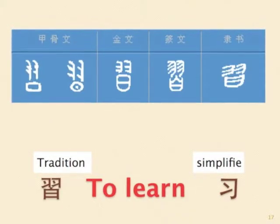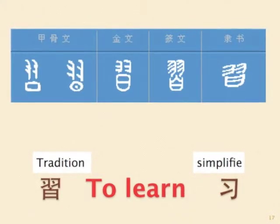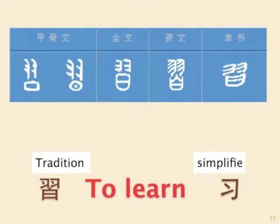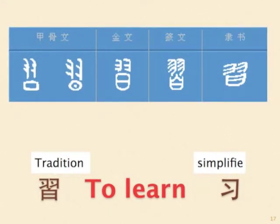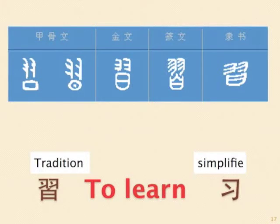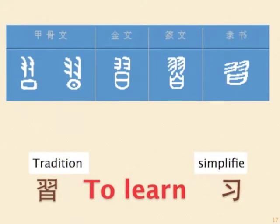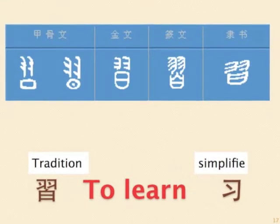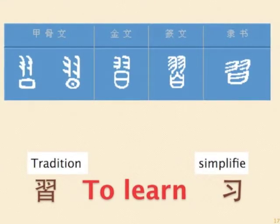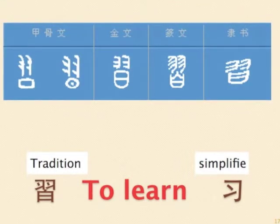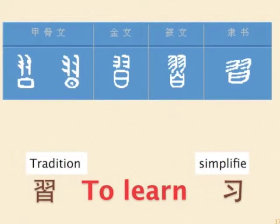Next word: to learn. The original drawing of feather and the nest together means young birds learning to fly. Later on, some strokes were added to the lower part to become the traditional form of this word. The simplified form only keeps the upper left part of the word.